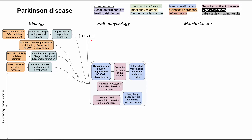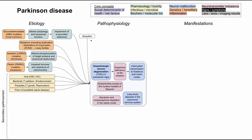Many other diseases can cause secondary Parkinsonism. There are infectious and microbial causes: viral infections including HSV, herpes, and HIV; bacterial causes like Treponema pallidum (syphilis) and Mycobacterium tuberculosis (TB); parasitic causes like Toxoplasma gondii and Plasmodium species, which causes malaria. Prion diseases can also cause Parkinsonism — Creutzfeldt-Jakob disease can present as secondary Parkinsonism.